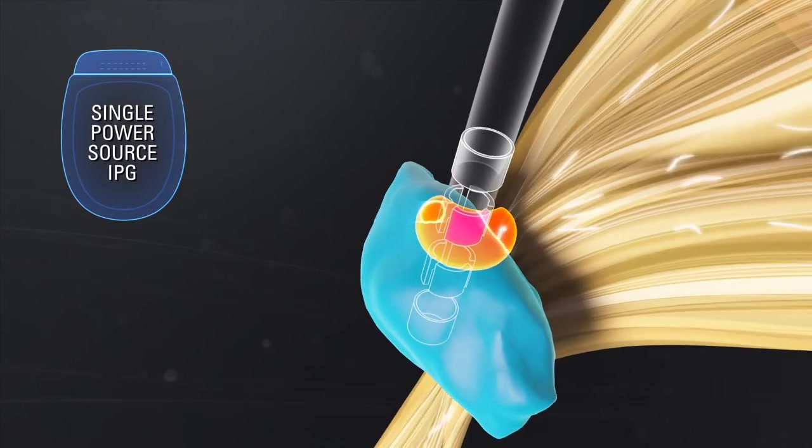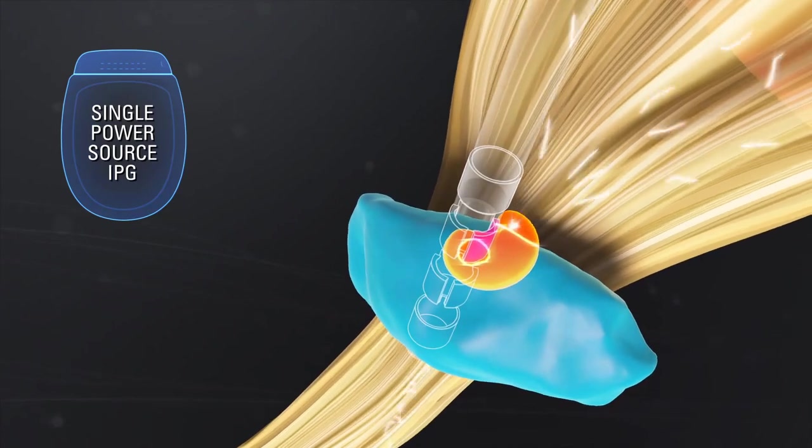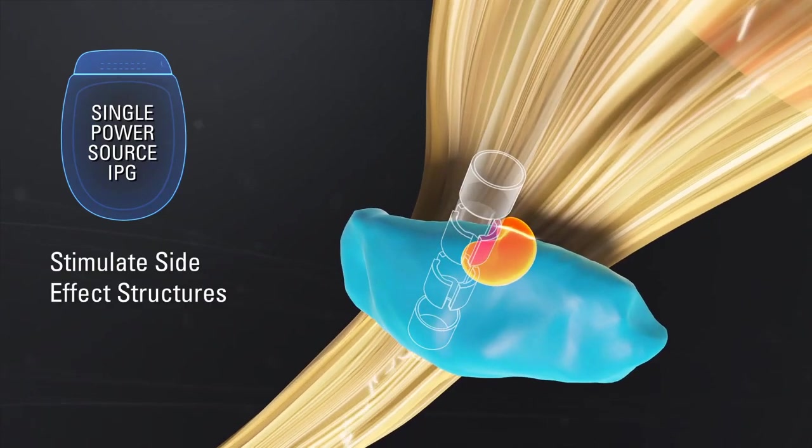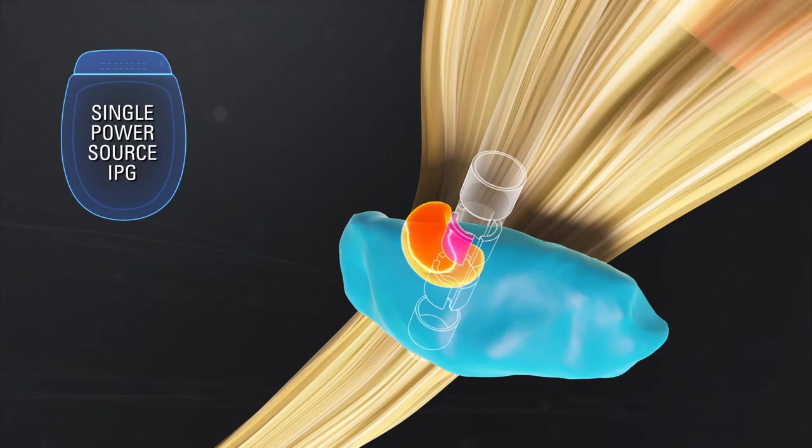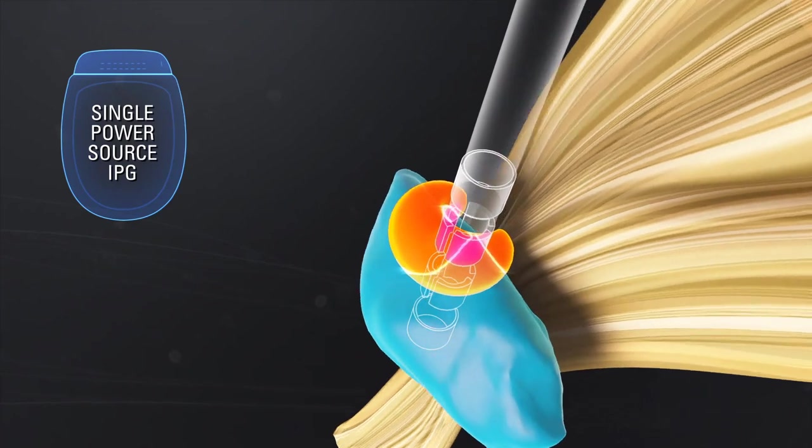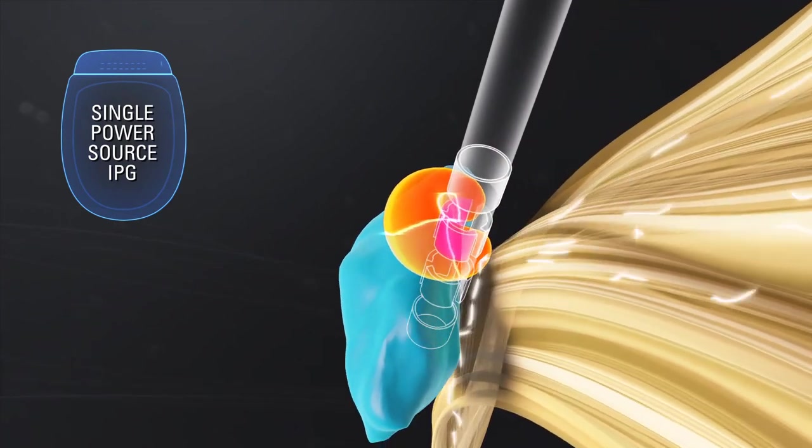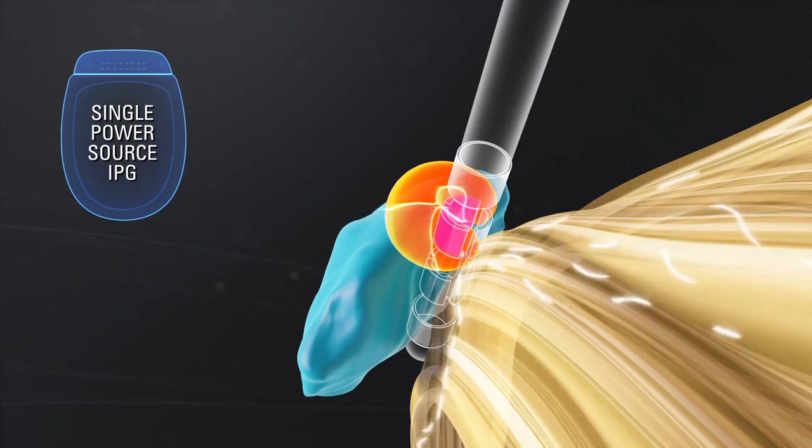Therefore, if the stimulating contact or contacts are not optimally positioned, current through a single contact may stimulate side-effect structures or inadequately stimulate the therapeutic target. By turning on two adjacent segmented contacts, a single-source IPG may be able to stimulate the therapeutic target, but at the expense of also stimulating the side-effects region.